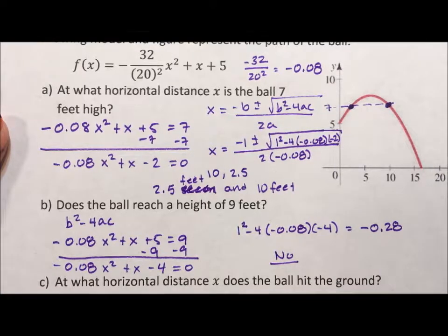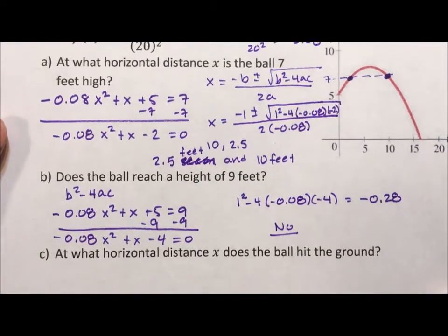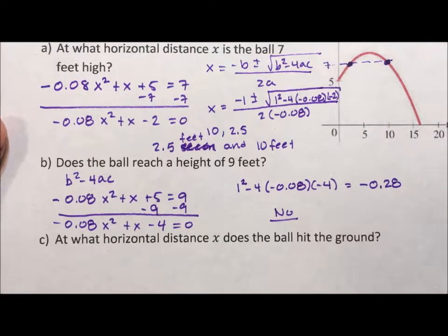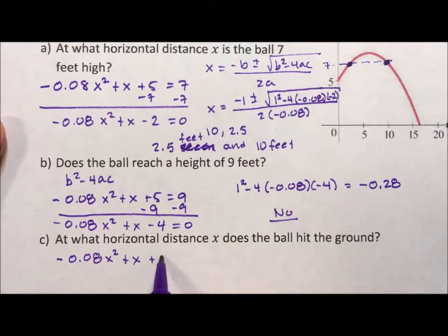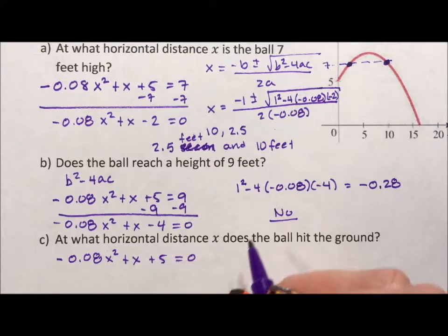It says, at what horizontal distance does the ball hit the ground? Well, it hits the ground when the height is 0. So I want to set negative 0.08 x squared plus x plus 5 equal to 0. And then again, I'm going to use the quadratic formula.